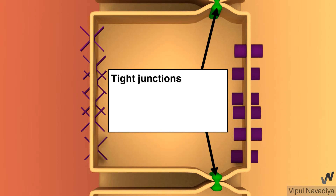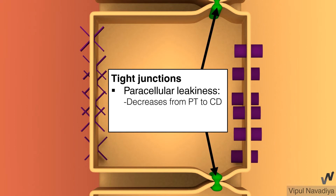Now let's see the importance of apical tight junctions. First, they determine the paracellular leakiness of the tubular epithelium. The more tight junctions present, the less leaky the epithelium is. In general, leakiness decreases from the proximal tubule to the collecting duct. One important utility of this varying leakiness is in concentrating the urine, which will be understood when we cover reabsorption of water.